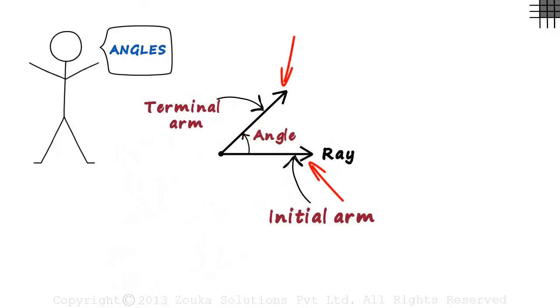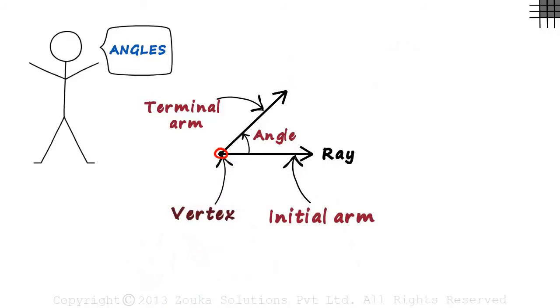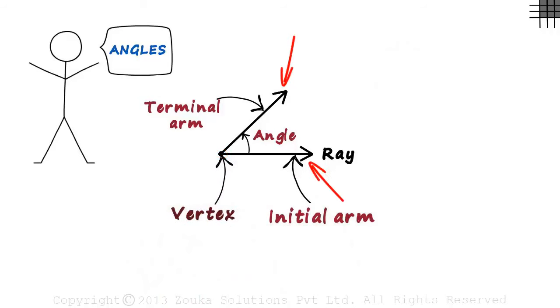Both the arms of the angle meet at one point. This point is called the vertex. Two rays meet at one point to form an angle. And we also refer to it as the origin as both the rays originate from this point.